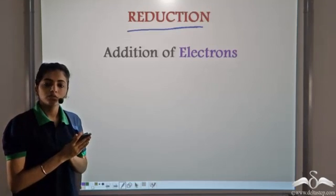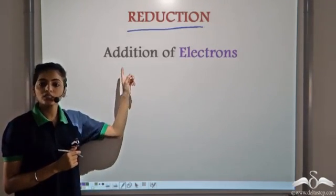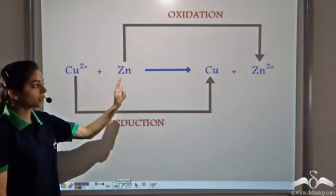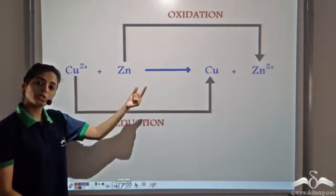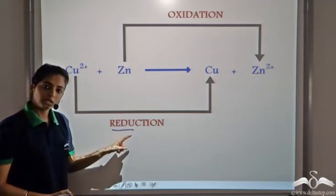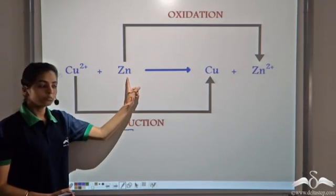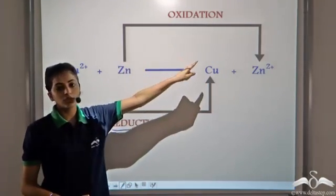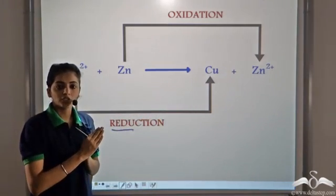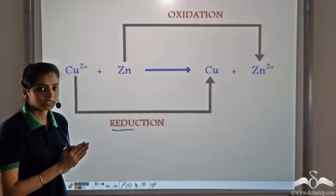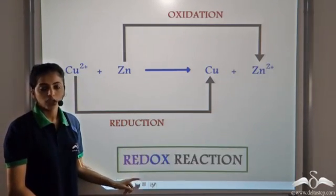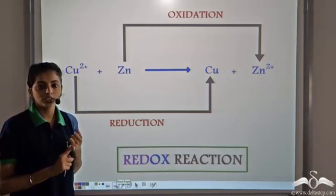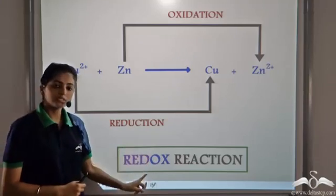So removal of electrons means oxidation, and addition of electrons means reduction. If we look at the equation: Cu2+ becomes Cu — it is gaining two electrons, so this is a reduction reaction. Neutral zinc atom is losing two electrons to become Zn2+, so this process is known as oxidation. Whenever both reduction and oxidation take place simultaneously in a single reaction, that reaction is known as a redox reaction — the name comes from reduction-oxidation.